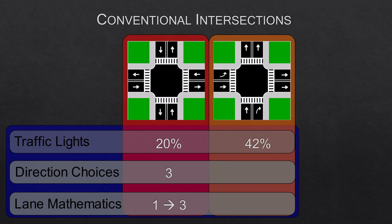Next I'm going to look at the usual one-way intersection. This does improve things in some ways. There are fewer traffic light phases — three in this case, two for traffic and one for pedestrians. So the lane with the green light gets a greater percentage of green light time. The only drawback with this intersection is that we only get a choice of two different directions to leave the intersection. But on the positive side, the lane mathematics are also improved: when the lights are green two lanes can enter the intersection at a time and these two lanes can feed into four output lanes.